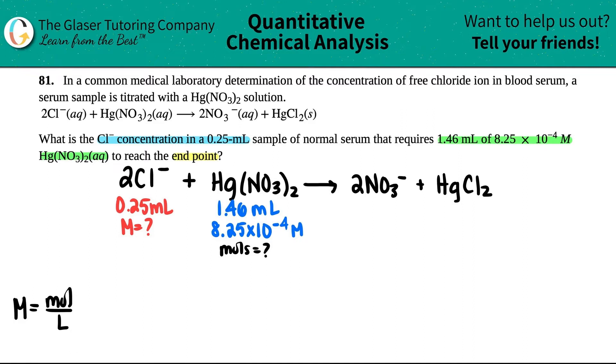Molarity equals moles divided by liters. If I cross multiply, moles would equal molarity times liter. Moles equals molarity times liter. They gave me mL, so the first thing I have to do is convert mL to liters. That's just divide by a thousand. I'm going to take 1.46 divided by a thousand - 0.00146 liters. Now I have a liter and a molarity, I can times them together to get my moles.